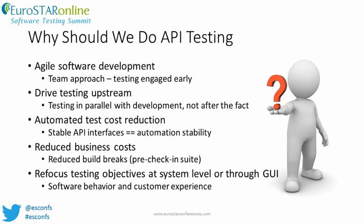Once an API signature is defined, testers can start designing an automated test even before the implementation of that API. API testing can also help reduce business costs by potentially identifying bad check-ins into a build. We use a subset of our API tests in conjunction with unit tests that developers run as a pre-check-in suite on a private build prior to committing a check-in into the branch. This pre-check-in suite was one way we significantly reduced costly build breaks.